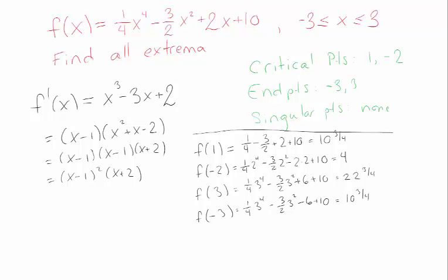Now that I have these values, I'm ready to decide that 4 is the smallest, so we have a global minimum at x equals minus 2, and 22.75 is the biggest, so we have a global maximum at x equals 3.